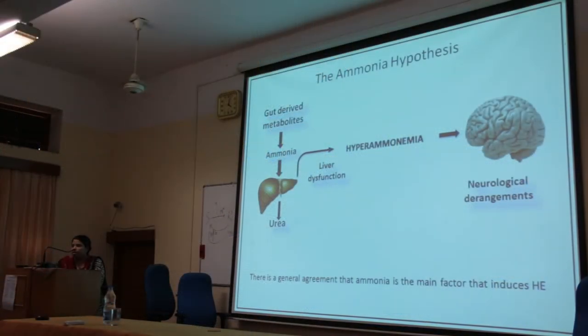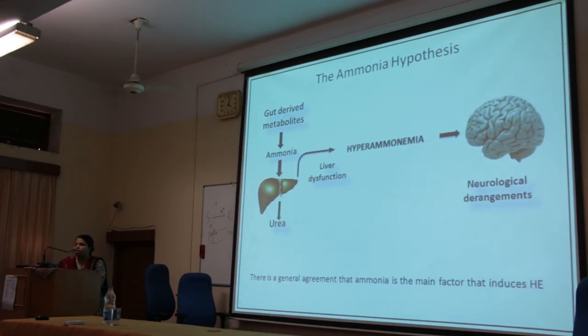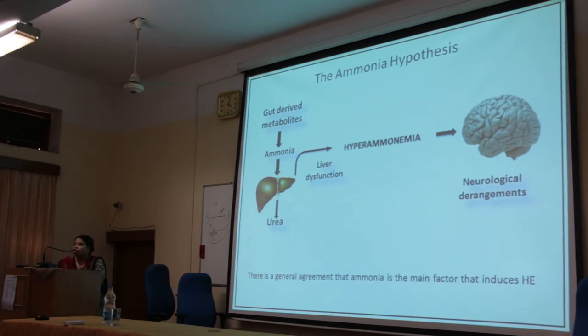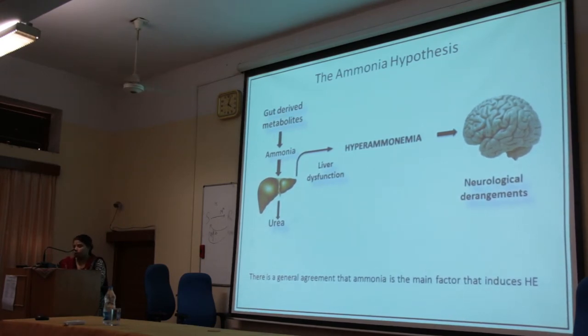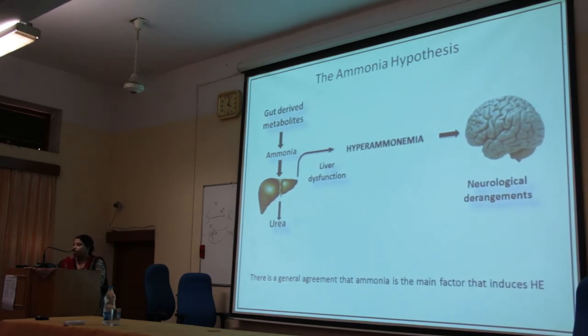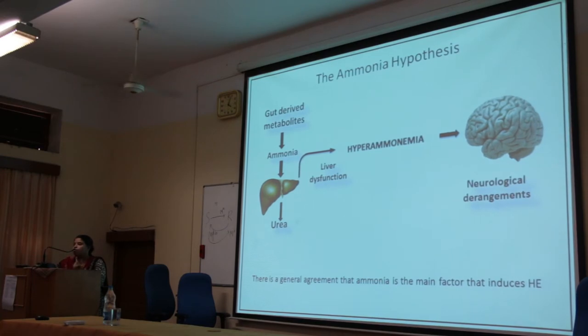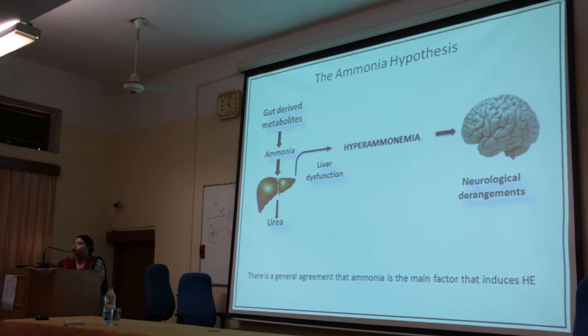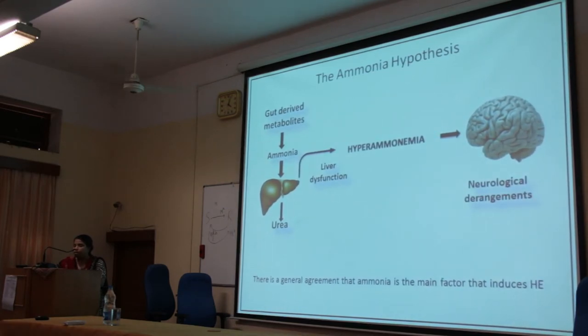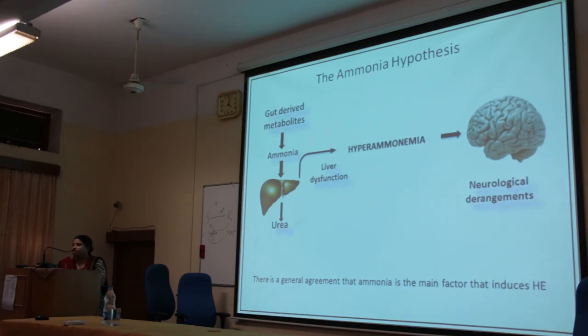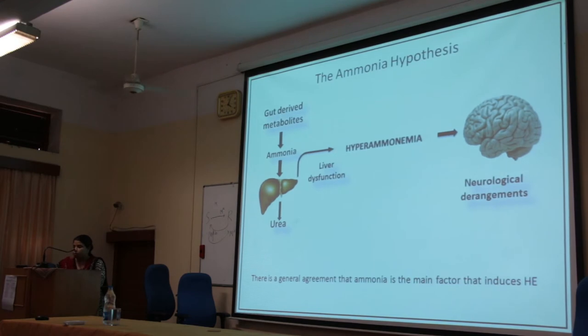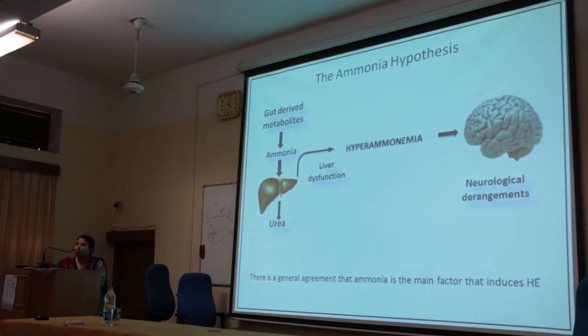I will now give a brief insight into the molecular understanding of this disease. Among several theories, one of the most prominent involves ammonia. When we consume proteins and different foods, gut-derived metabolites are broken down and the end product is ammonia. Ammonia is highly toxic, but in a healthy liver the urea cycle converts ammonia into urea, rendering it harmless. When the liver is not functioning properly, ammonia accumulates — a condition referred to as hyperammonemia — and can easily reach the brain.